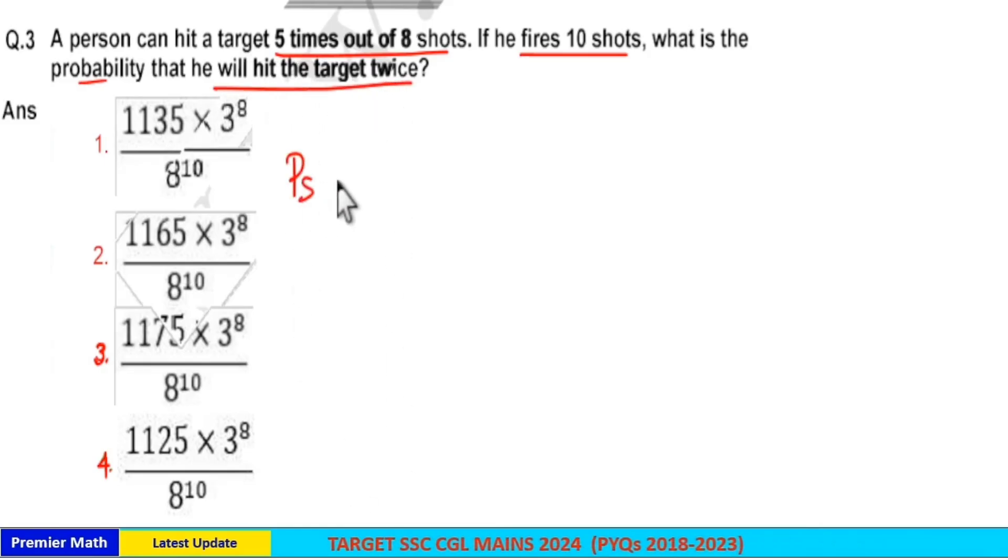Here probability of success is 5 out of 8 times he hit the target and probability of failure is 3 out of 8 times he missed the target.